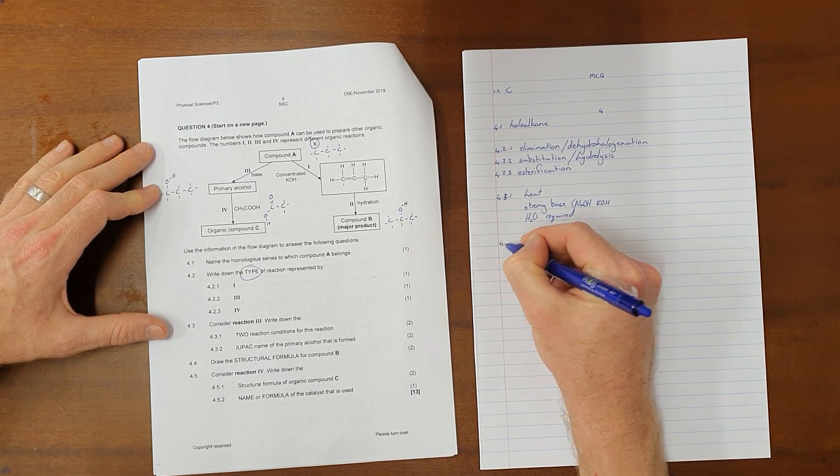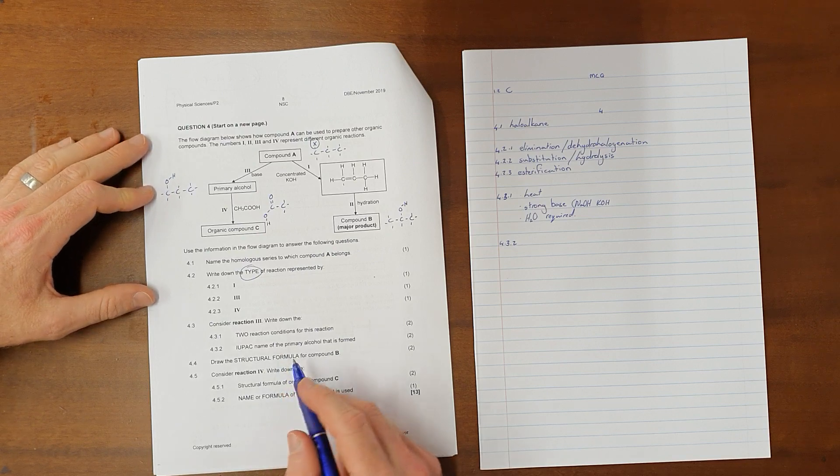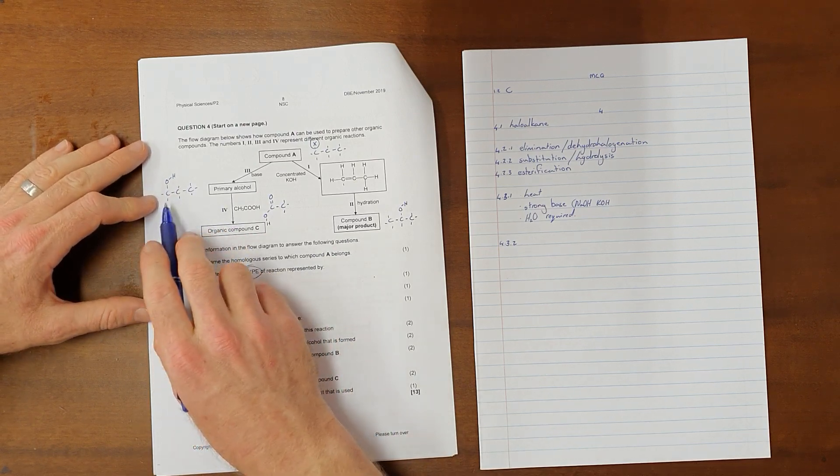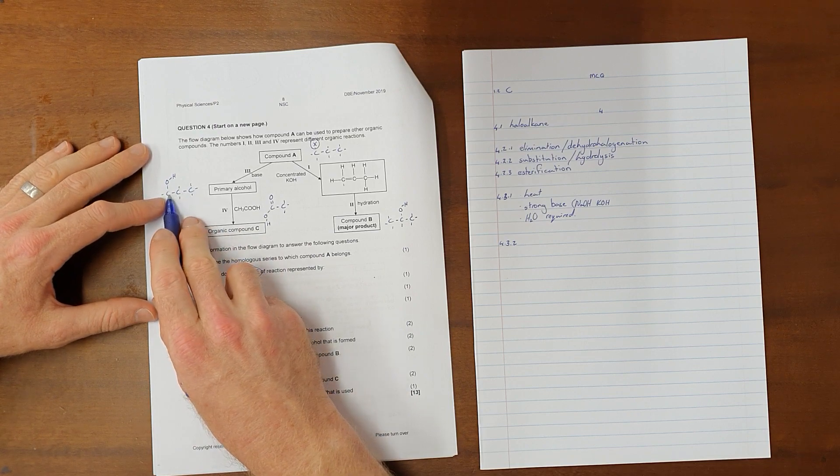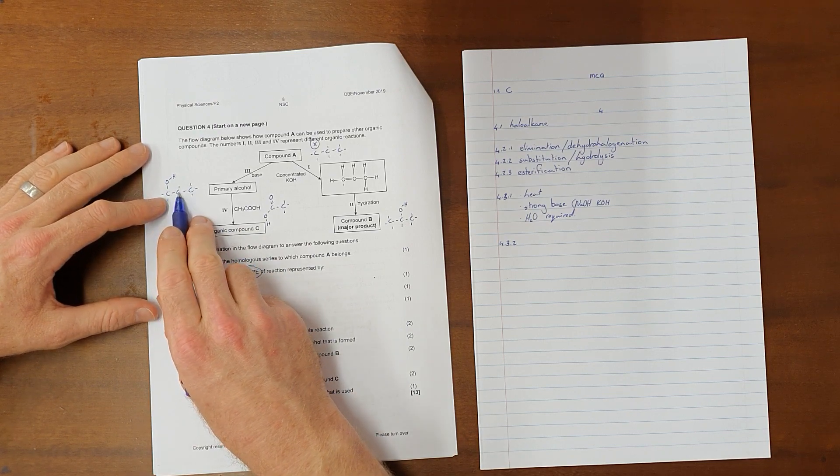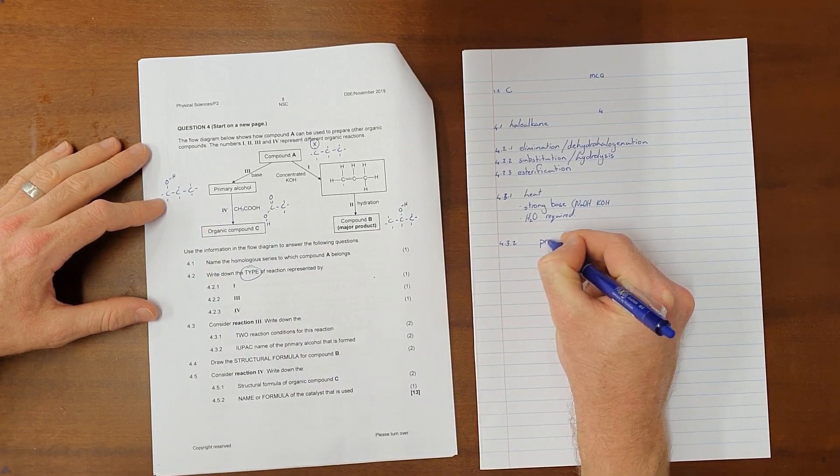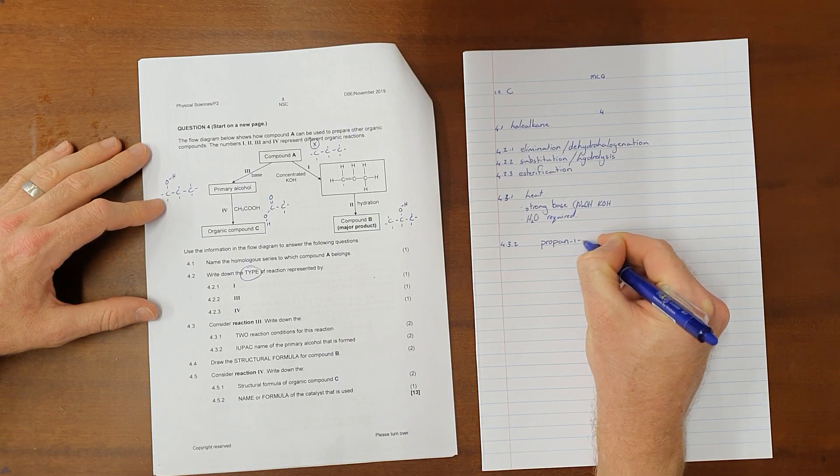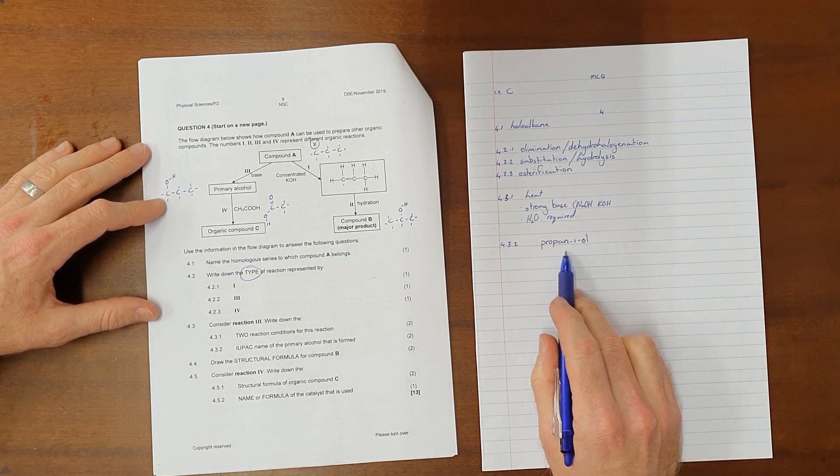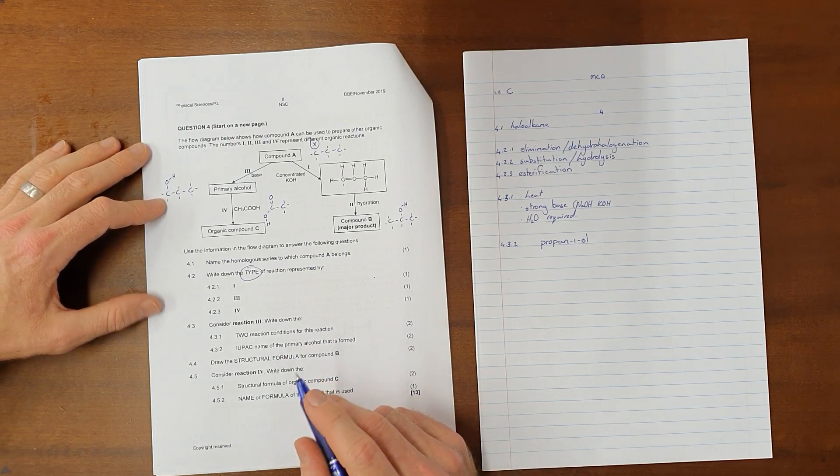4.3.2 then asks, What is the IUPAC name of the primary alcohol that is formed? And, as we've stated here, primary alcohol, the hydroxyl group must be on the first carbon. There are three carbons in this chain, meth, eth, prop. And so, we can call this propan-1-ol because we know that alcohols get the suffix anol and we need to indicate the position of that hydroxyl group.